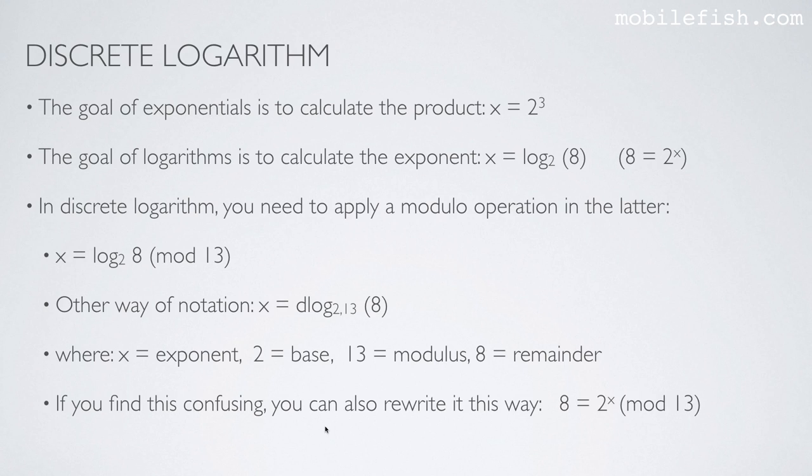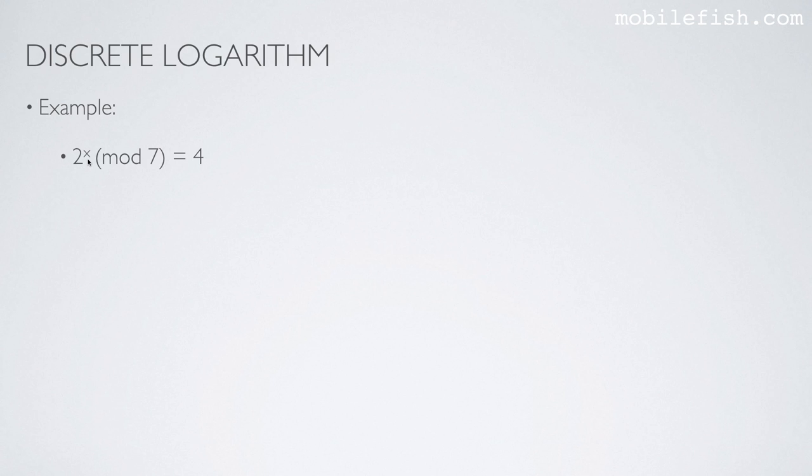If you find this confusing, you can also rewrite it this way. Take this equation and add the modulo operation. 2 to the power of x modulo 7 is 4. The question is, what is the x value?